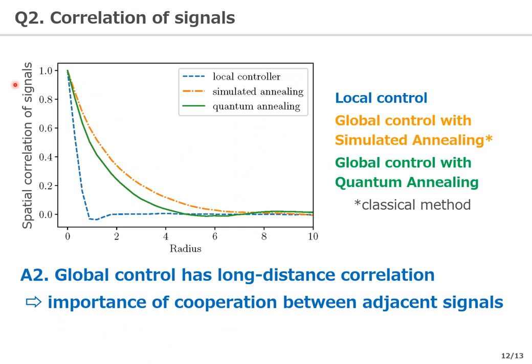Here we examine the second question: the size of the island created by the signal lights. The horizontal axis is the distance away from a certain signal, and the vertical axis is the correlation with the signal at that point. For local control, the correlation with the neighboring signal is almost zero — there is almost no correlation with surrounding signals. For global control, the correlation remains over a distance of several signals, suggesting that groups of signals should cooperate to ensure global optimality.